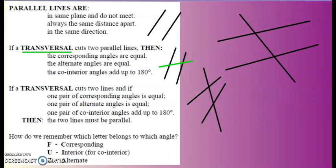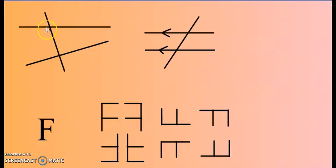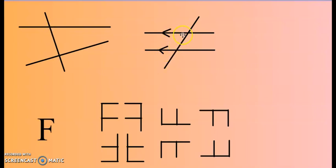When we work with parallel lines, we try to find the F for corresponding angles, a U for co-interior angles, and a Z for alternate angles. When we work with two lines and a transverse line and the lines are not parallel, the co-interior angles won't add up to 180 degrees. It is only in parallel lines that co-interior angles add up to 180 degrees and alternate angles are equal.